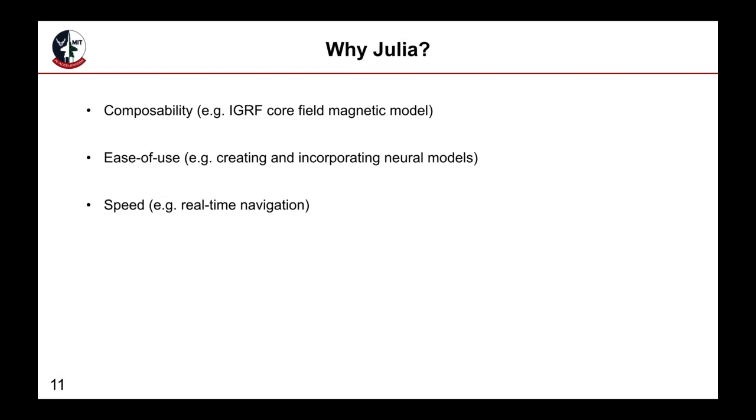There have been a few benefits of using Julia for this project. First, composability. For example, the core field model was directly available within Julia. Secondly, ease of use, such as creating these neural models is very straightforward to create different neural networks and basically plug and play into the state-of-the-art calibration models. And finally, speed. The code runs extremely fast, fast enough that it could be done in real time on a real platform.